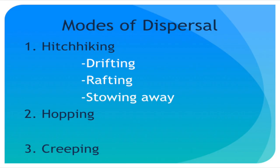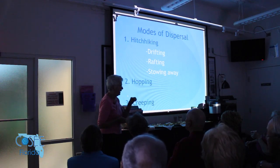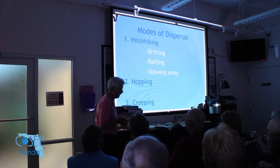So how do these things that don't have long-lived larvae get around? They do it by hitchhiking on some vehicle. There may be rafting on larger drifting objects caught up in currents, and there's stowing away on something else that moves — whether a living vessel or an actual ship. Or they can do it by hopping: not going far from their parents but moving in little steps like stepping stones. And then there's creeping, which I'll talk about last.